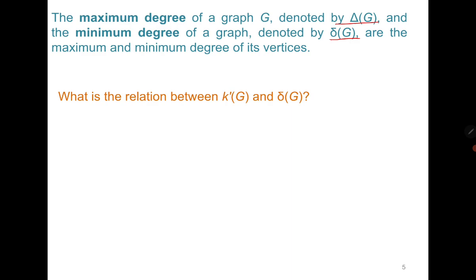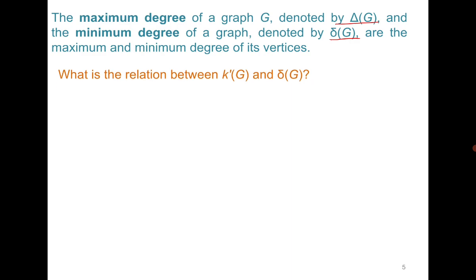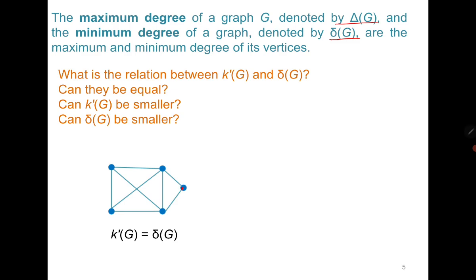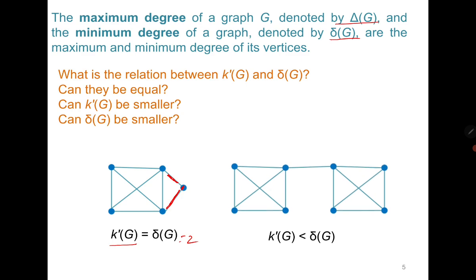Think about the relation between the minimum degree of a graph and edge connectivity. In this example, the minimum degree is 2 and the edge connectivity is also 2 — it does not have a cut edge, but if I delete these two edges, the graph becomes disconnected. But in this other example, the minimum degree is 3, yet it has a cut edge, and therefore the edge connectivity is 1.